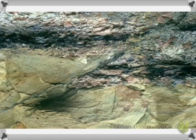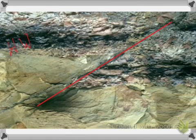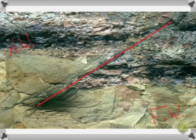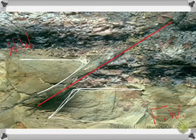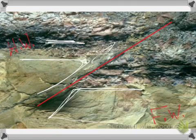Looking at matching layers in this second reverse fault example: the tan section on the left got pushed up and used to match with the tan section down on the right. There's also a black section here that matched up with the dark section on the other side — both confirming the hanging wall moved upward in a reverse fault.